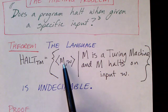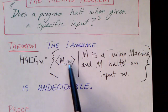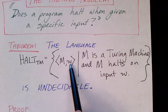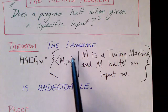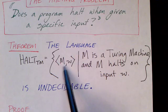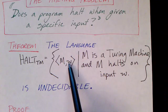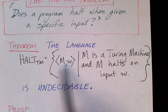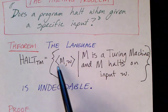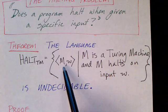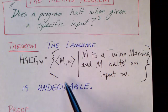Given a description of a Turing machine and a string, if you run the Turing machine on that string and that Turing machine would halt, then that pair M, W is part of the language HALT_TM. And recognizing elements of that language is undecidable.